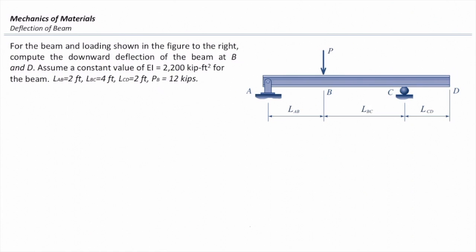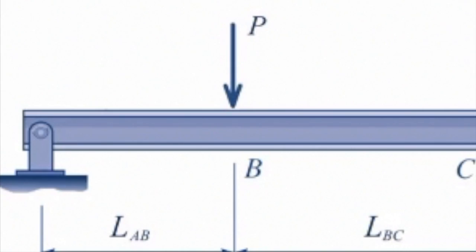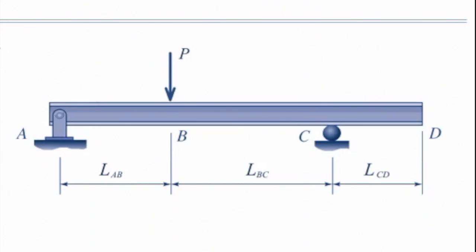Look at this structure. A loading P is applied at point B. This structure is restrained at A by a pin support and at C by a roller support. The problem asks for the deflection of this beam at two points: point B and point D. We assume the modulus of elasticity times moment of inertia is constant and equal to 2200 kips·ft². The length from A to B is 2 feet, from B to C is 4 feet, and from C to D is 2 feet. The load applied at point B is equal to 12 kips.